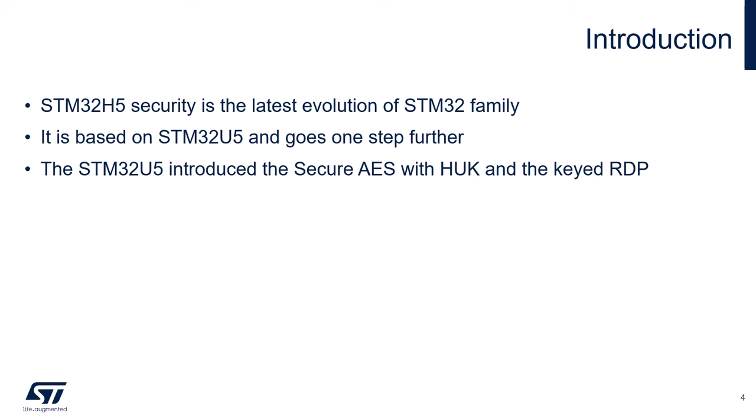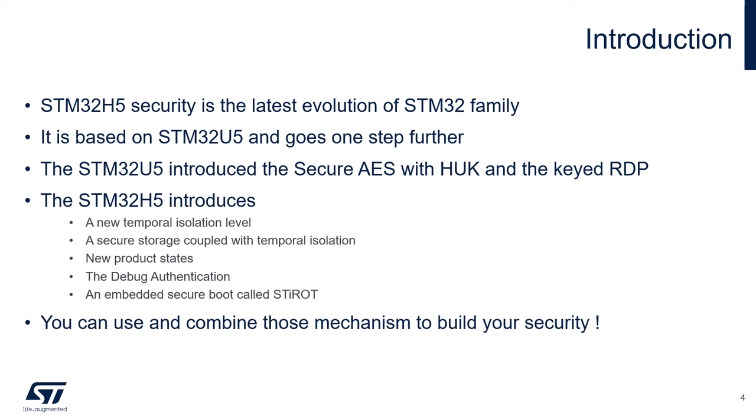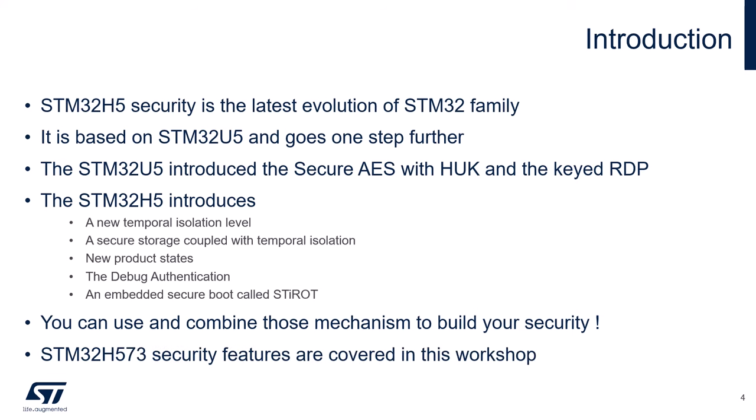The STM32U5 introduced the new Secure AES with hardware unique key and the hardware key-based readout protection regression. With the new STM32H5, we are introducing a new temporal isolation level, a new Secure Storage coupled with temporal isolation, new product states, a new debug authentication feature, and an embedded Secure Boot called STI-ROT. These mechanisms, together with the other STM32 legacy security features, allow your final application to achieve a higher level of security. Our best-in-class device in terms of security is currently the STM32H570, and this is the device we are covering in this workshop. Be aware that there may be variations and reduced security features in other devices of the same family.